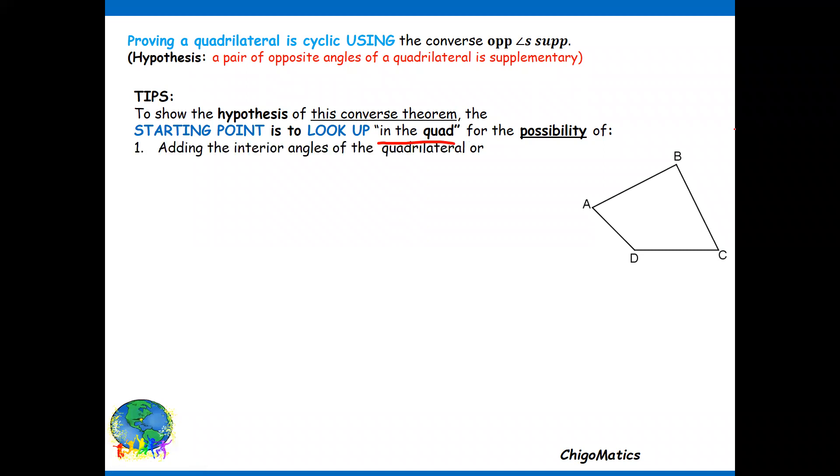For the possibility of adding the interior angles of the quadrilateral, that means we want to add this angle plus this one plus this one plus this one and equal to 360. Or we can formulate two equations involving 90 degrees and then add them. That is, within that quad there will be a chance that you can formulate two equations equal to 90, then you can add those equations to come up with 180.